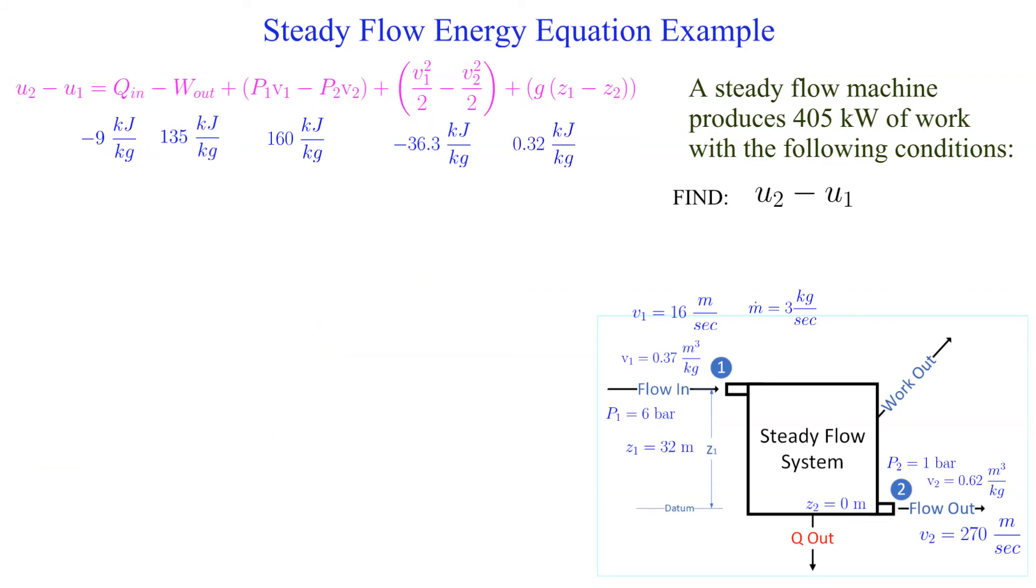Now that we have all the parts, we just need to do the arithmetic. Keep in mind that the heat transfer term has a negative sign and that we are subtracting the positive work out term. Since we are extracting work and the fluid is losing heat, it is expected that the answer will be negative. We obtain minus 20 kilojoules per kilogram.